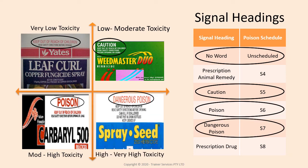A chemical with the words 'dangerous poison' at the top is considered to be of very high toxicity and should only be used by experienced professionals or authorised persons. In most cases, the normal chemical user will only ever use chemicals with the word 'caution' or 'poison' at the top.